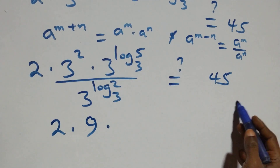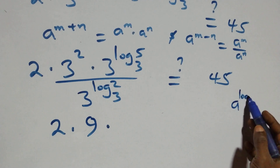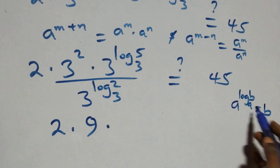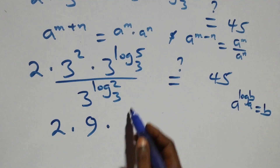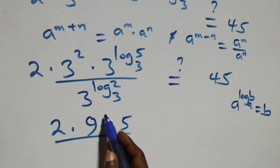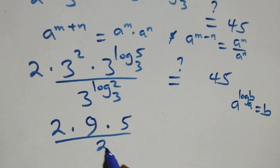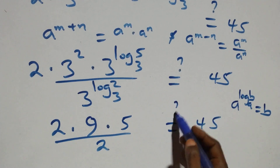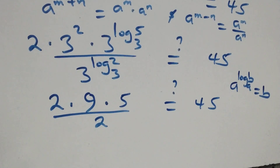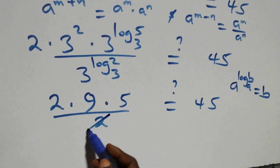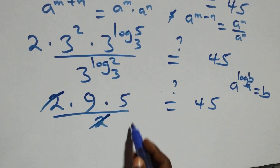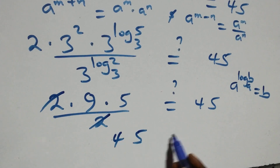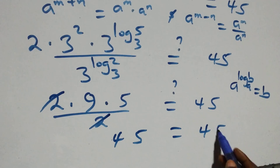We apply the identity a raised to power log_a(b) equals b. So here we have 5, and over here we have 3^(log₃2), which gives 2. That is, 2 times 9 times 5 over 2 — the 2s cancel each other — and we have 9 times 5, which gives us 45, equals to 45.